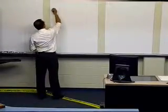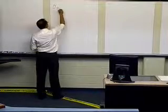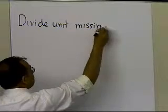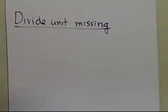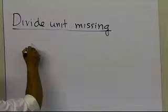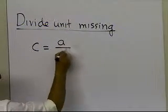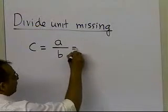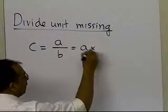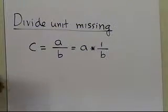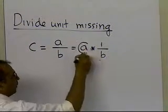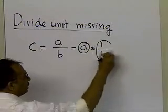In this segment, we're going to talk about divide unit missing. What I mean by that is, let's suppose if you are trying to find the number a divided by b, so you are simply trying to find out what is a divided by b. This can also be looked at as multiplying a by 1 divided by b. So basically it is a multiplication process when you are dividing, but the multiplication process is between a and the inverse of b.